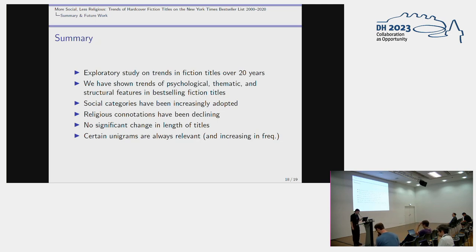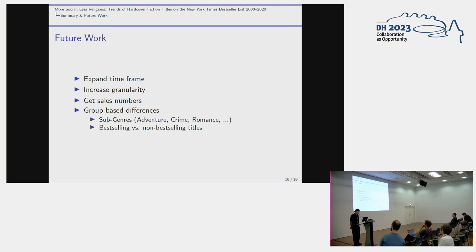To sum up: we have presented an exploratory study on trends in bestselling fiction titles over 20 years, showing trends in psychological, thematic, and structural features. Social categories have been increasingly adopted, while religious — or merely religiously connoted — titles have been declining. We found no significant changes in title length and that certain unigrams are almost always relevant. For future research, it would be interesting to expand the dataset and timeframe for longer-term trends, investigate group-based differences such as bestselling versus non-bestselling titles or between genres, increase data granularity, and include sales numbers.